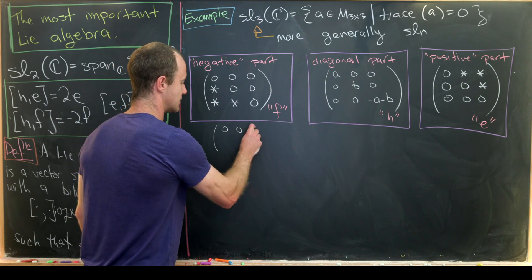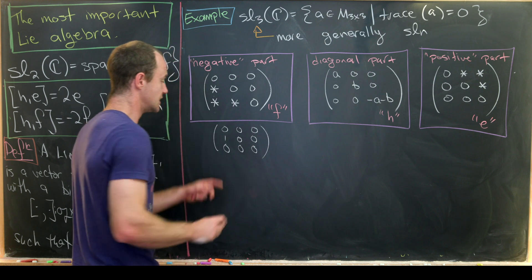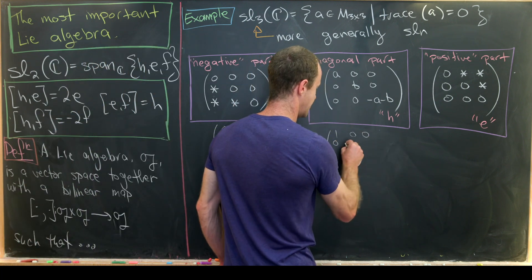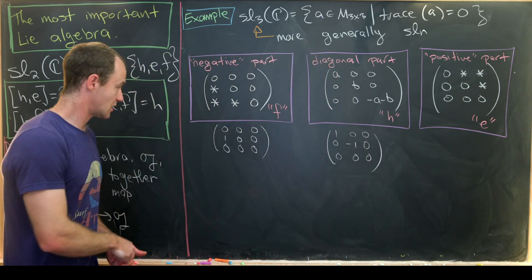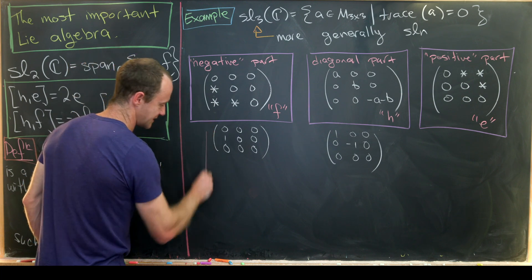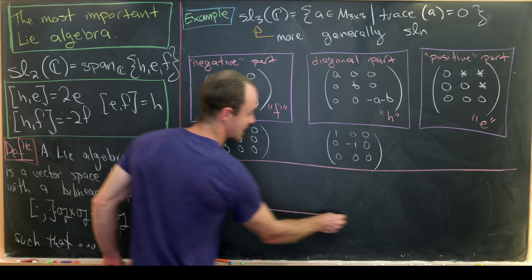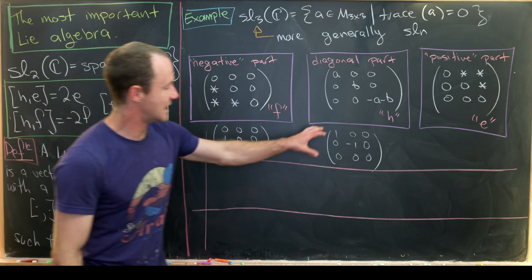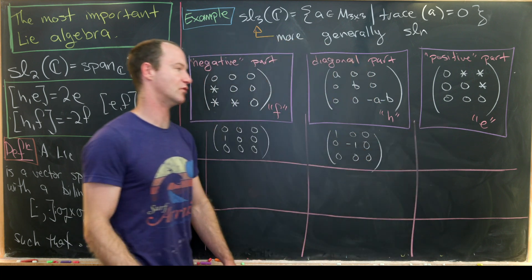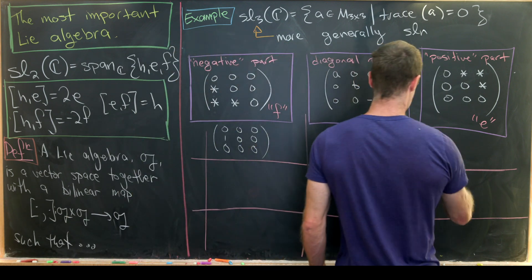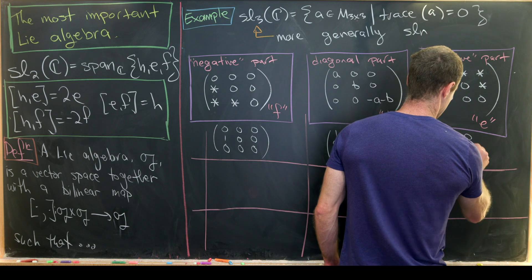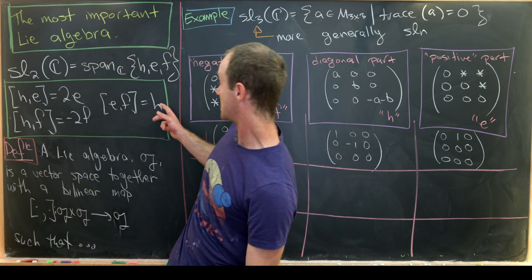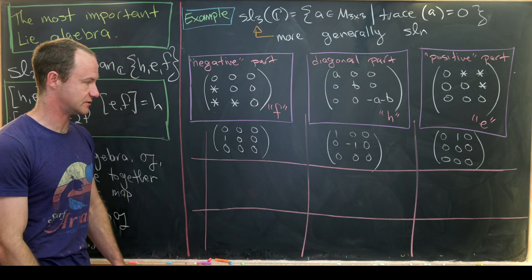The first copy: f is the 3×3 matrix with a 1 in position (2,1) and zeros elsewhere; h is diag(1,−1,0); and e is the matrix with a 1 in position (1,2) and zeros elsewhere. I'll leave it to you to check that these choices of f, h, and e satisfy the same commutation relations as the bracket relations for SL2.